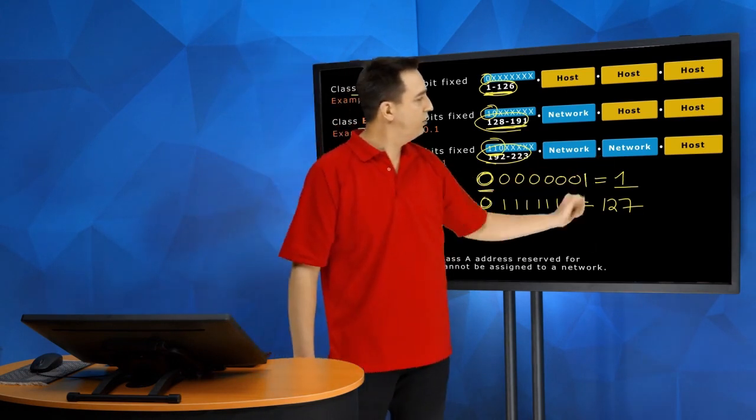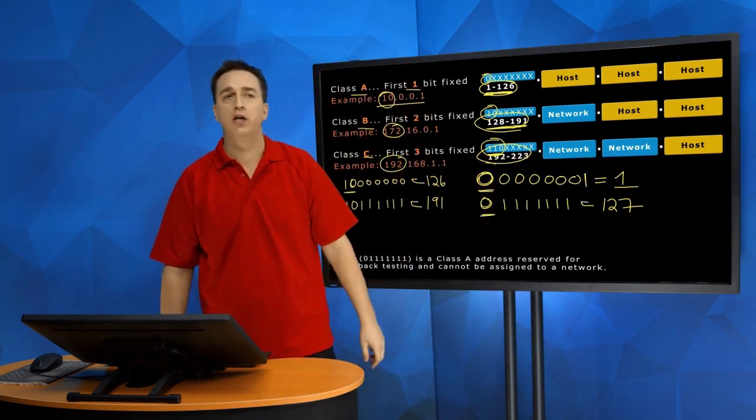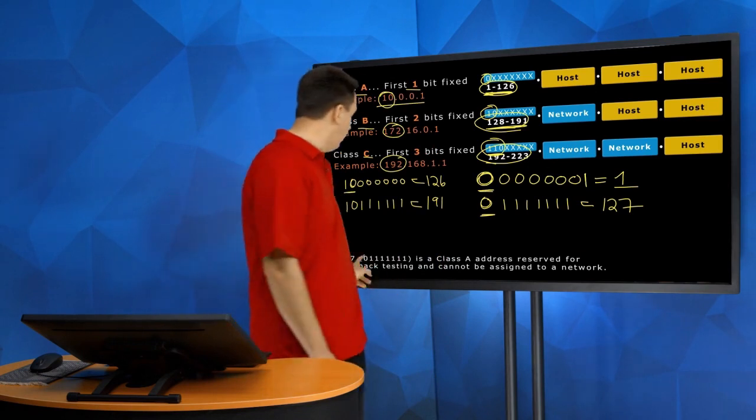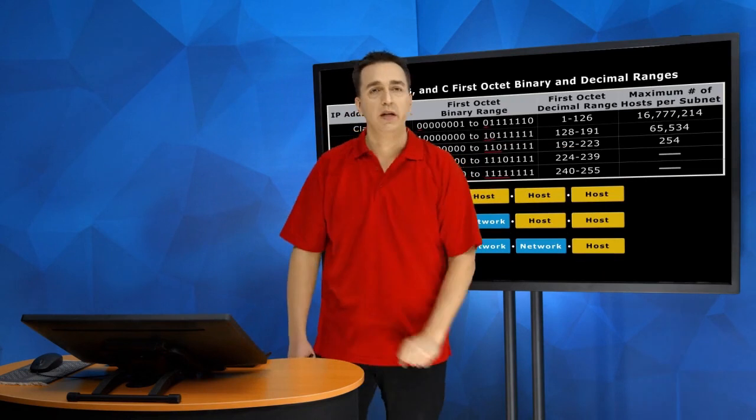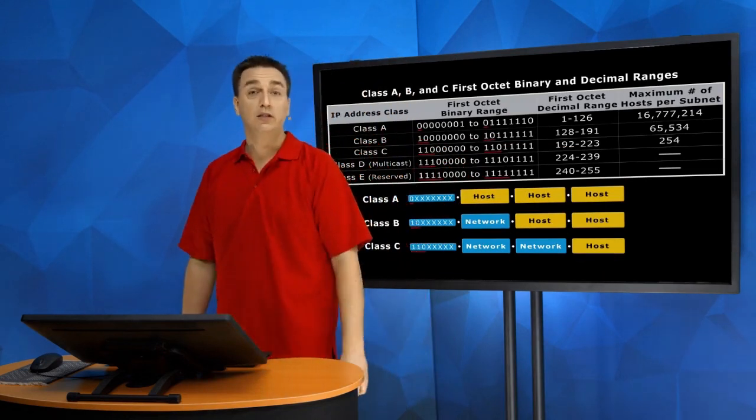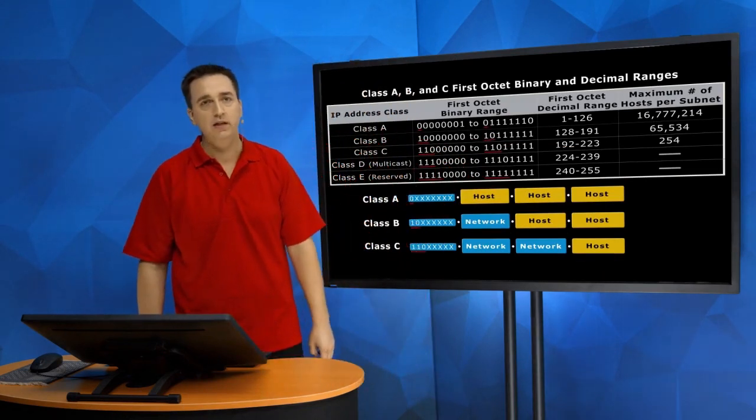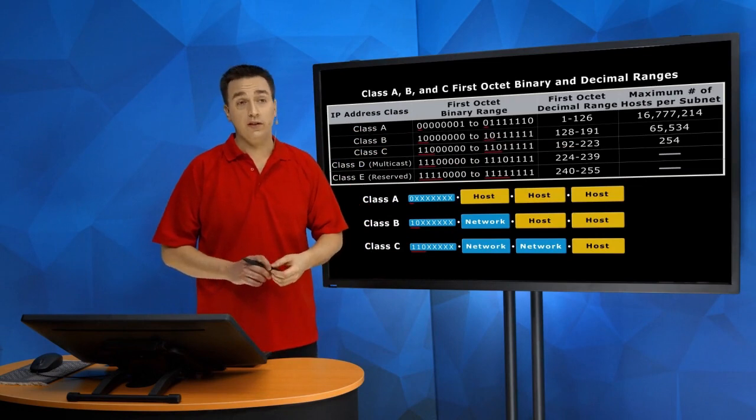And your Class C, you have a street with a small number of hosts on it. And as I mentioned before, the number of hosts, 16 million by default for Class A, 65,000 for Class B, and 254 for the Class C.